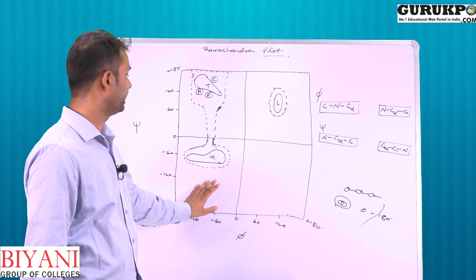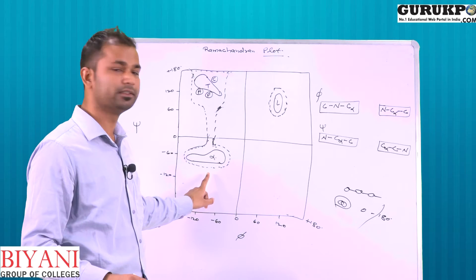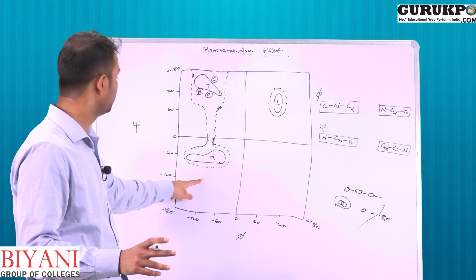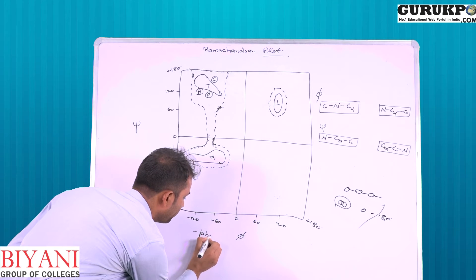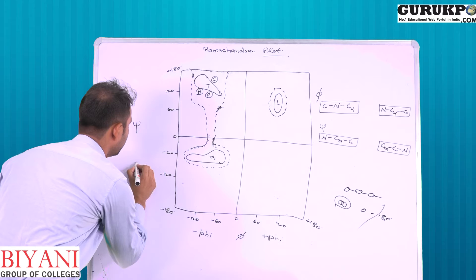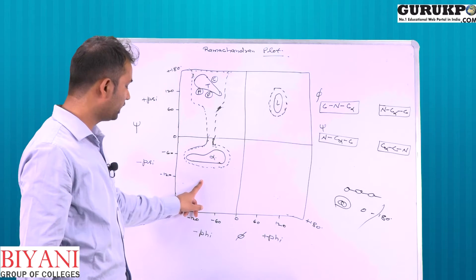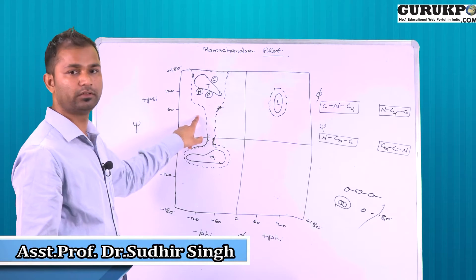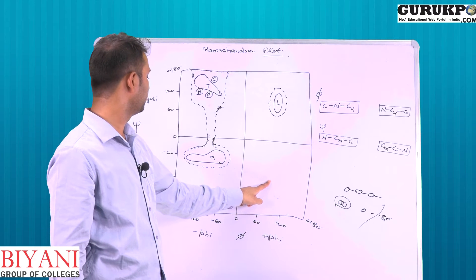The Ramachandran Plot is divided into four quadrants. In the first quadrant, both phi and psi angles are negative. In the second quadrant, phi is negative but psi is positive. In the third quadrant, both angles are positive. In the fourth quadrant, psi is negative.